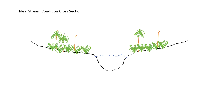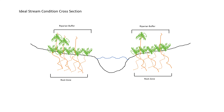Here we can see the cross-section of a healthy undisturbed stream. You can see the channel is stable and intact and there is a well-vegetated riparian buffer. The riparian buffer is a dense barrier of plants with deep root zones that filter pollutants before they reach the stream.